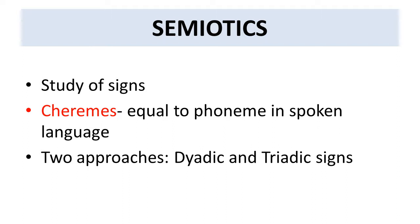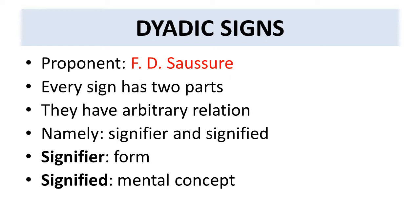Now there are two approaches or two models in semiotics that we are going to cover. These two models are the dyadic model of signs and the triadic model of signs. Let's look at them one by one, starting with the dyadic model.